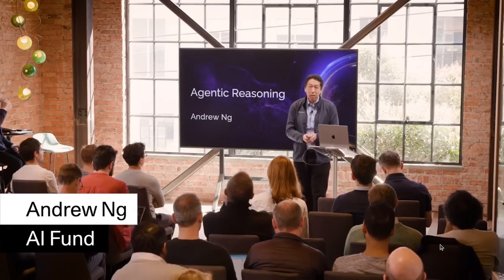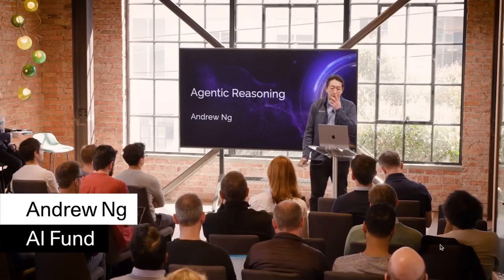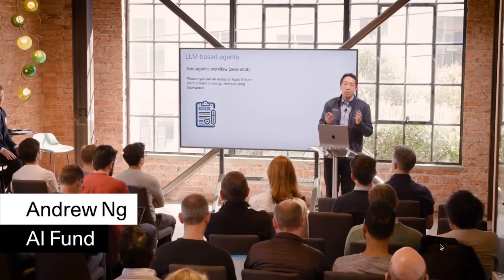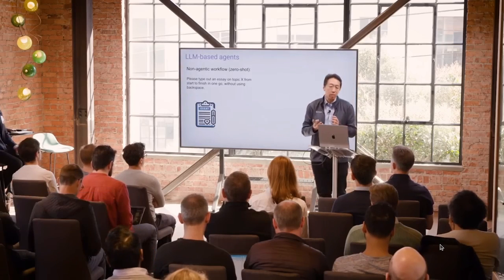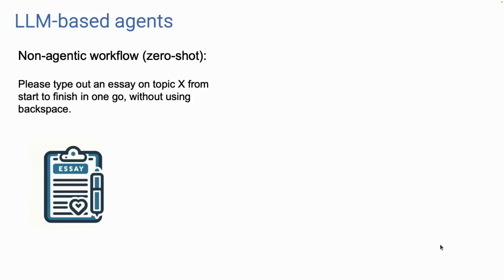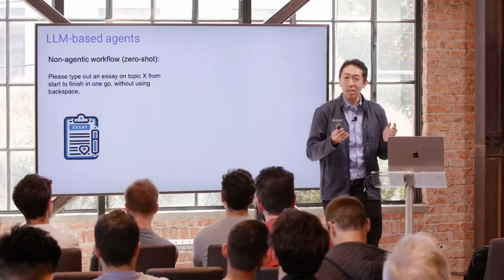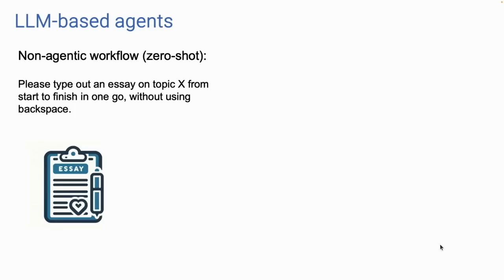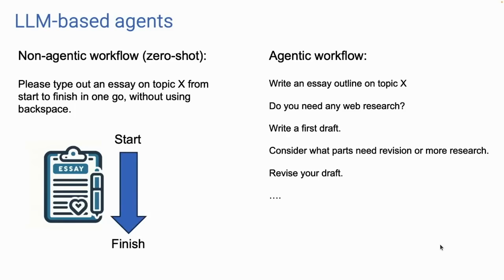And I'm also excited about all the other What's Next presentations. So, AI agents — today the way most of us use large language models is with a non-agentic workflow, where you type a prompt and it generates an answer. That's a bit like if you ask a person to write an essay and say, please sit down at the keyboard and just type the essay from start to finish without ever using backspace.